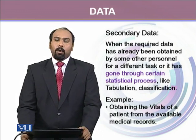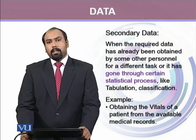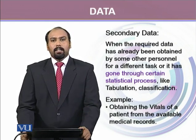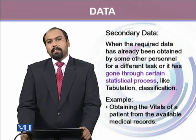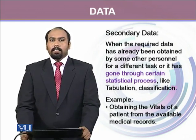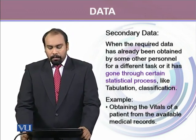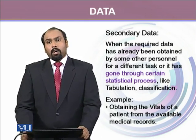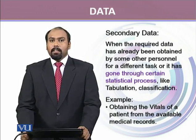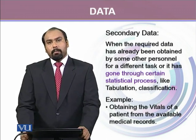The other type of data is called secondary data. Secondary data is the sort of data that has already gone through certain statistical procedures, or a process of making tables, or has been organized in a certain way. Most of the time, secondary data are obtained from different sources where data has already been collected for a different purpose. For example, hospitals keep medical records of patients. If we take vitals of any patient from the hospital medical records, that will be considered secondary data because it's a second-hand source.